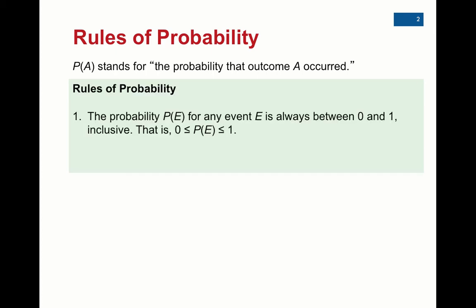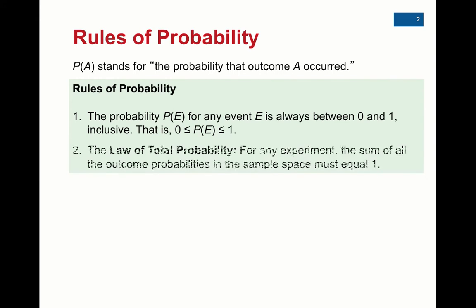The first rule: the probability of any event is always between zero and one, or zero and 100% if you convert it to a percentage. The mathematical statement is that zero is less than or equal to the probability of any event, which is less than or equal to one. So the probability of any event could be zero, one, or any number in between.